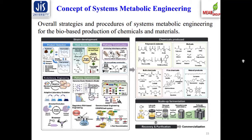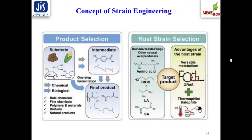For product selection, you need to define your final product, choose the substrate, and have prior knowledge of potential intermediates or precursors that could accumulate within the system. This is based on the biophysicochemical phenomena of bulk chemicals, fine chemicals, polymers, materials, biofuels, and natural products. The process could be a one-step or multi-step enzymatic network working in an orchestrated manner that gives higher substrate conversion efficiency and higher final product accumulation.